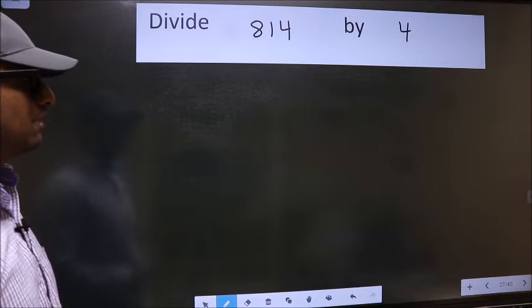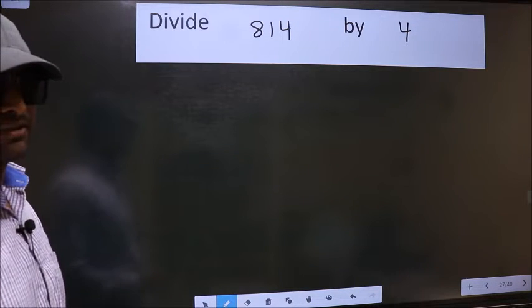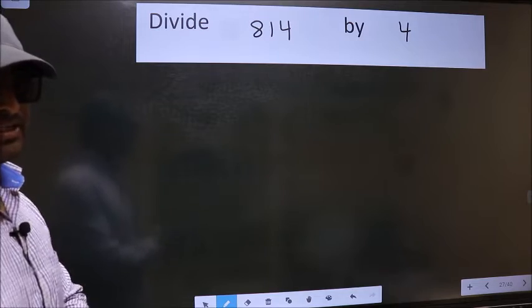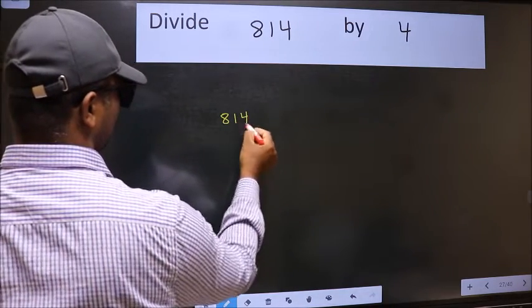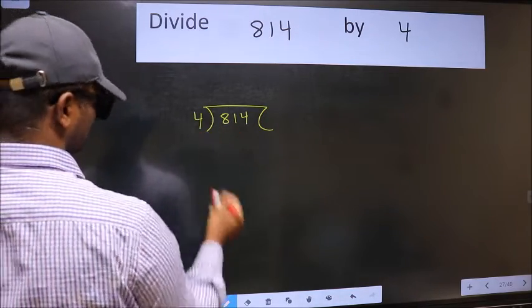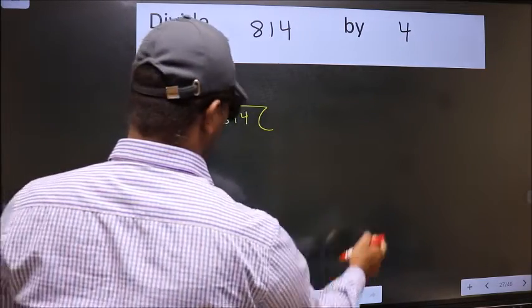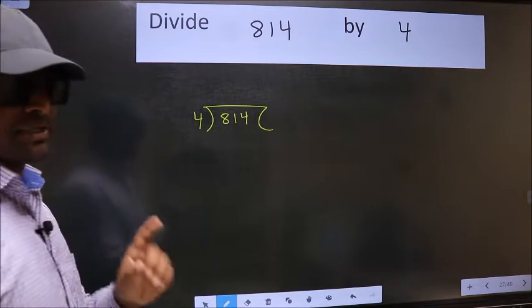Divide 814 by 4. To do this division, we should frame it in this way: 814 here and 4 here. This is your step 1.